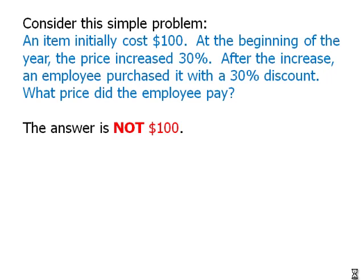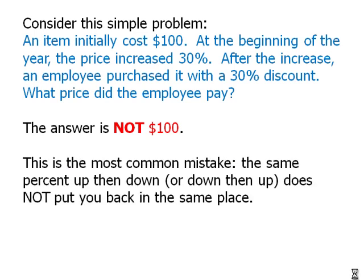The first thing I'll say is that the answer is not $100. That is the trap answer — the predictable mistake answer. More than half the people who take the test will guess that, and they will be wrong. That is the most common mistake in this whole subject. The same percent up and then down, or down and then up, does not put you back in the same place. People think a 30% up and 30% down cancel. They absolutely do not.